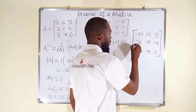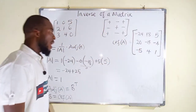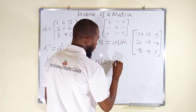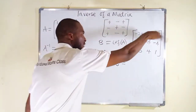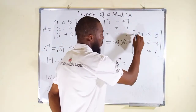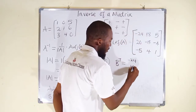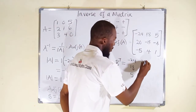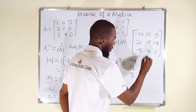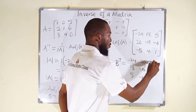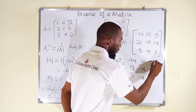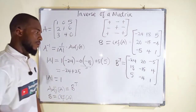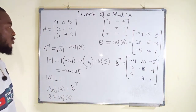So these are the respective cofactors of the entries of matrix A, and this is our matrix B. Now for B transpose, we transform the rows into columns. First row becomes the first column: negative 24, 18, 5. Second row becomes the second column: 20, negative 15, and negative 4. The last row transforms into the last column. So this is B transpose, and this B transpose is said to be the adjoint.